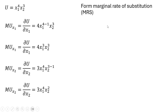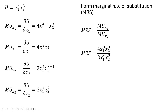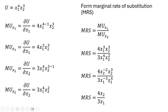Next we'll form the marginal rate of substitution. The MRS is the marginal utility of Good 1 divided by the marginal utility of Good 2. Taking our results, marginal utility of Good 1 on top and marginal utility of Good 2 on the bottom. We move x subscript 1 raised to the third power down into the denominator and add the exponents on Good 1, leaving Good 1 raised to the power of 1. Then we move x subscript 2 squared into the numerator, add the exponents on x subscript 2, and simplifying, we have the marginal rate of substitution.